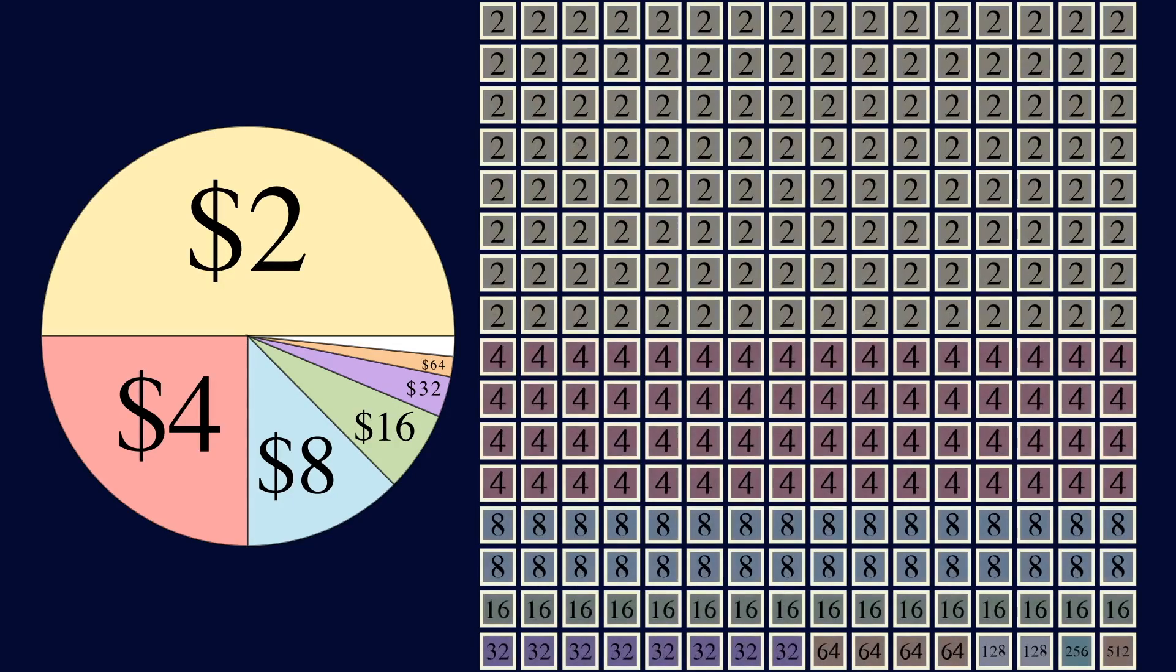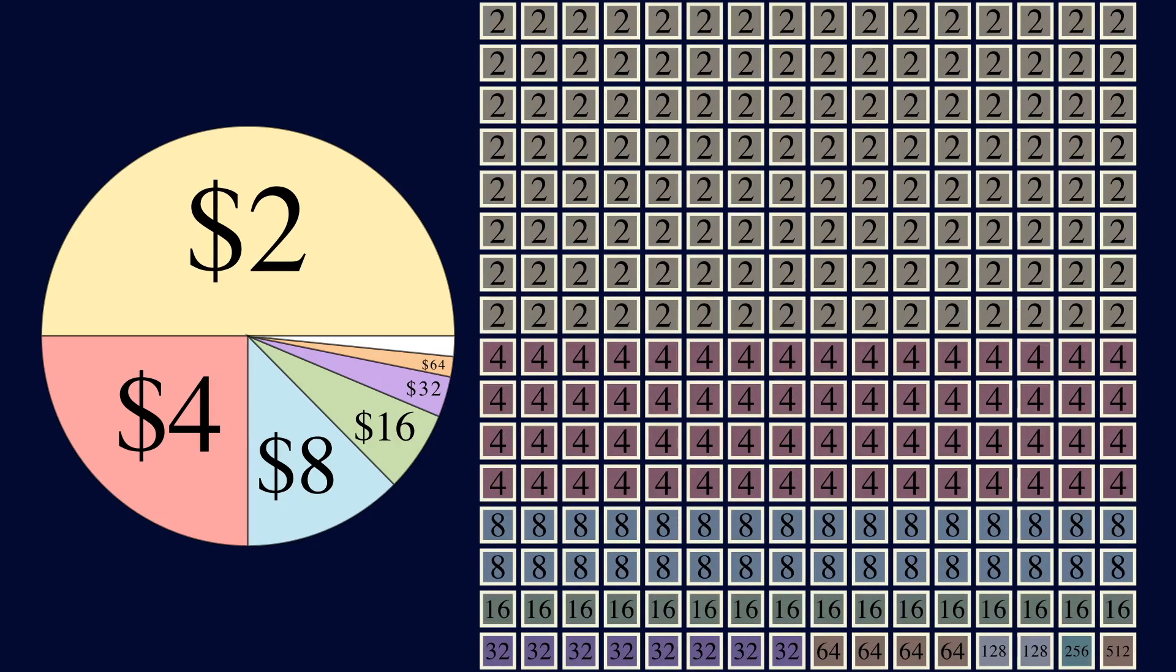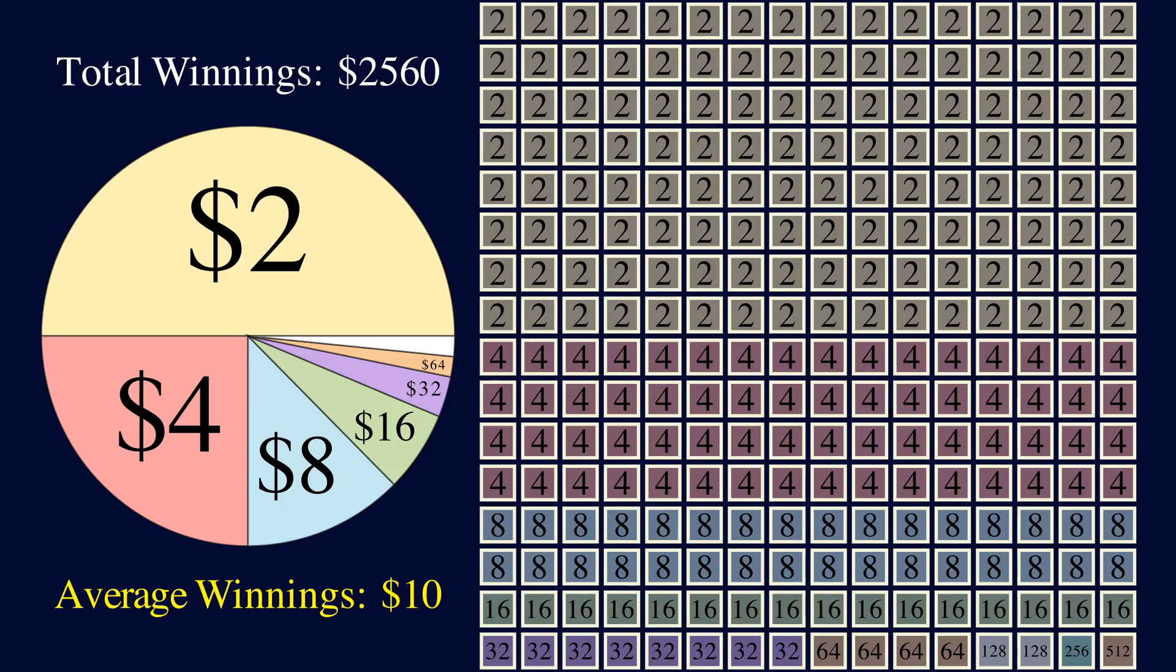We can estimate this distribution of payouts the same as before. And our estimated total winnings is $2,560, which gives us an average payout of $10 per game.